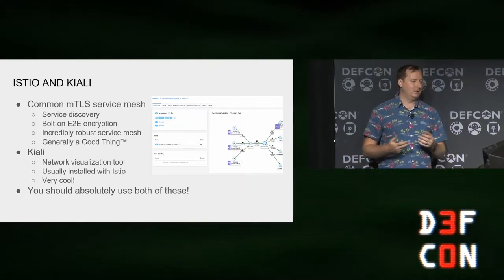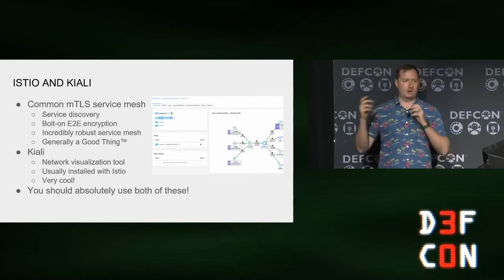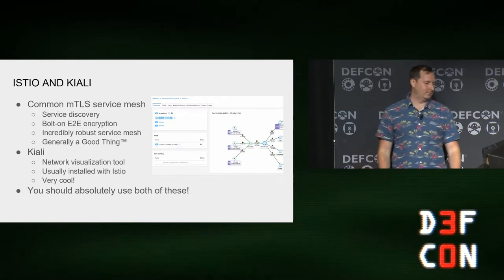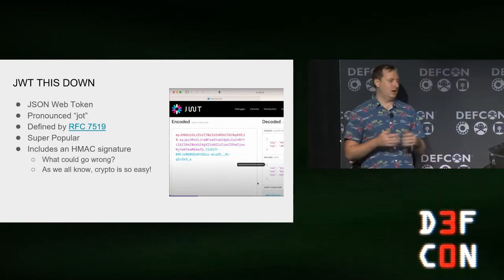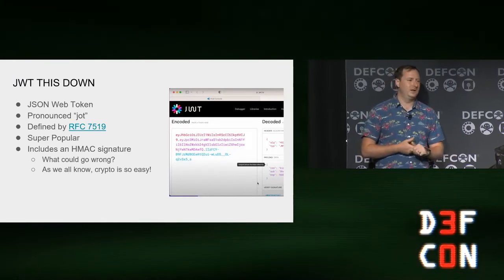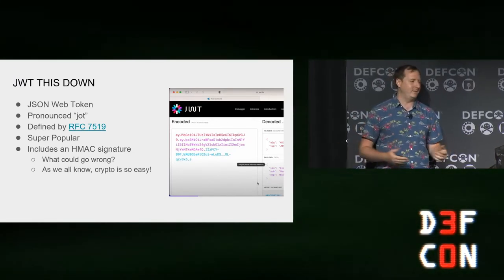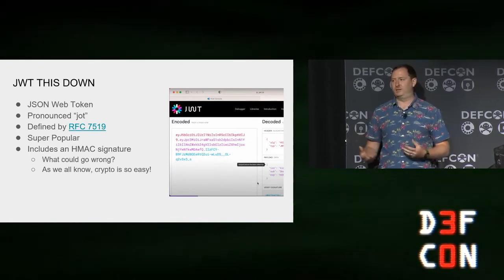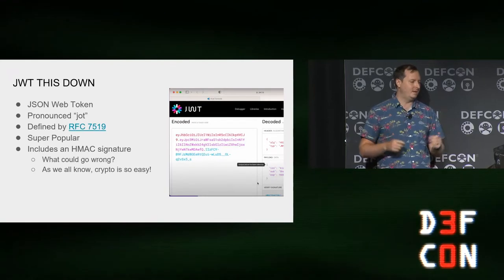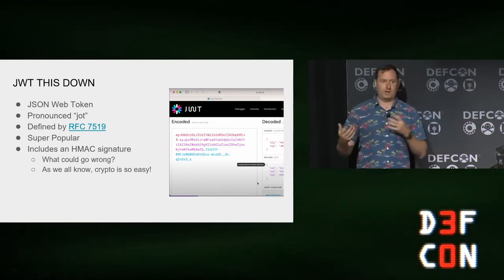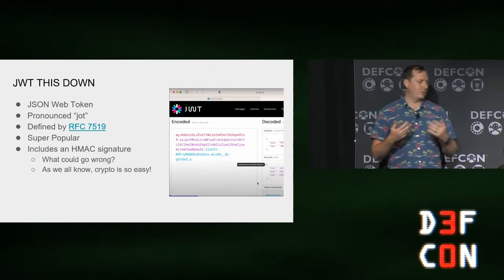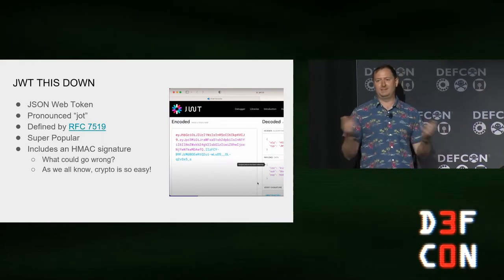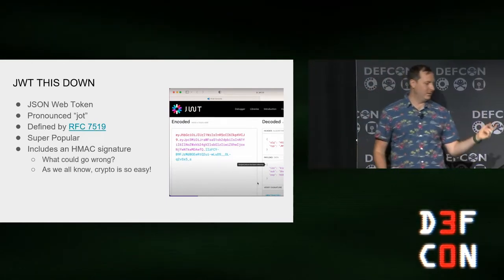One of the great things about Istio is the Kiali tool, which is a visualization layer. Now that you're intercepting all the traffic and watching it through the network, you can really figure out what you're doing and how your network is working. A quick shout-out to JWTs — JSON Web Tokens, pronounced 'jot'. It's a very common authentication protocol. JWT.io is a great website if you ever get one and need to interpret it. The important part is that it gets HMAC'd at the end — and as everyone knows, cryptography is perfect and very easy to implement.